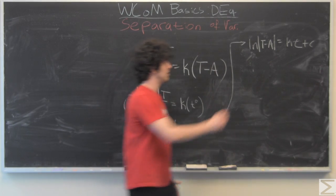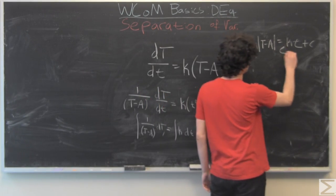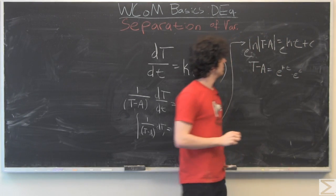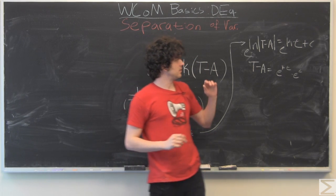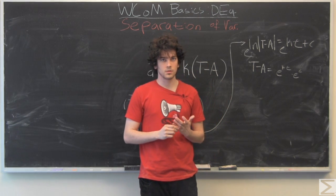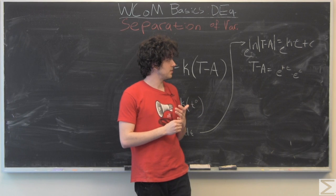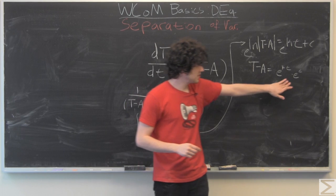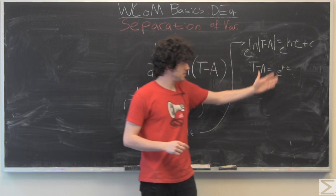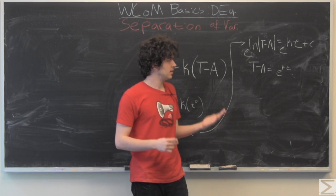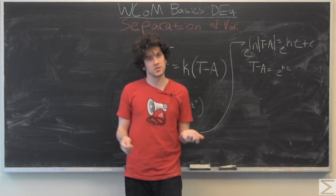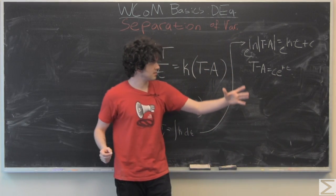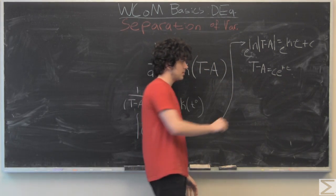So exponentiating to get rid of that natural log and the laws of exponents says we can break this up into a product, and this C is going to absorb E to the C because E is also just a constant. So you can think of that as a new arbitrary constant times E to the KT.